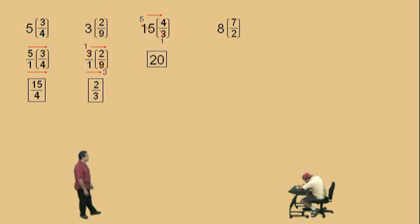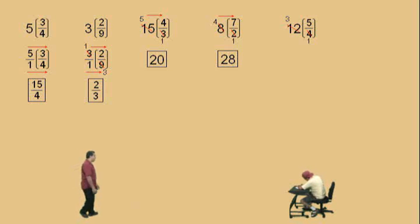Alright. Let's try this one. 8 times 7 over 2. Yes. Because 8 over 2 reduces to 4 over 1. 4 times 7 is 28 over 1, which is 28. Very nice. Let's do 12 times 5 fourths. Yes or no, Charlie? Yes. Now, the 12 over 4 reduces to 3 over 1. 3 times 5 is 15. 15 over 1, which is just 15. Very nice.